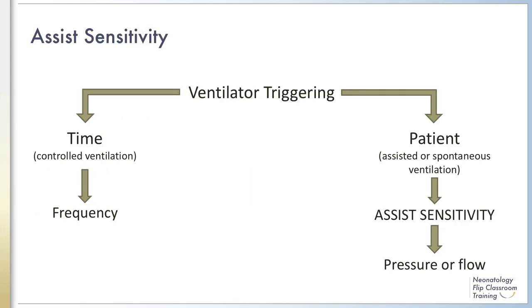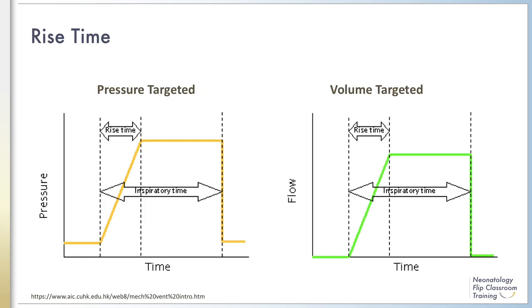The assist sensitivity determines how easy it is for the patient to trigger the ventilator to deliver a breath. The sensitivity setting is the threshold value for the trigger variable which, when met, starts inspiration. Increased sensitivity improves patient-ventilator synchrony, but excessively high sensitivity can result in false or auto-triggering, caused by patient movement or condensation of humidity in the ventilator tubing. Assist sensitivity can be flow or pressure-triggered, although flow-triggering is generally more sensitive for smaller patients. The rise time determines the rate of rise of flow in volume control modes or pressure in pressure control modes; very short rise times can be uncomfortable, while long rise times may reduce tidal volume or require higher pressure.